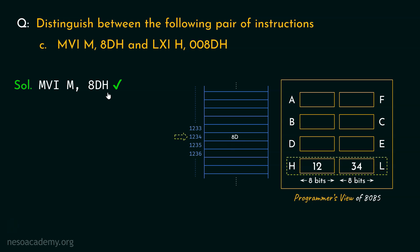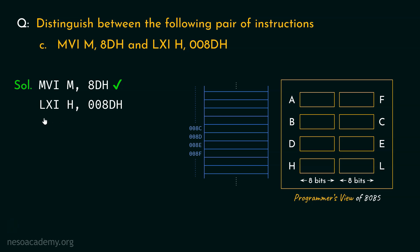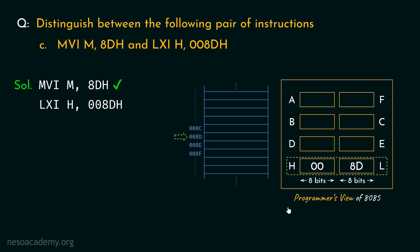For the second instruction, LXI H,008DH — this falls under immediate addressing mode. We are loading an immediate 16-bit value into the HL register pair. Execution of this instruction loads the HL register pair with the value 008DH. Once this is done, the microprocessor will know that memory location 008DH is being pointed to by the HL register pair.